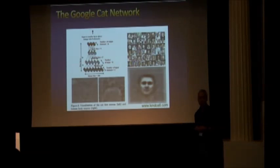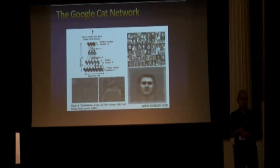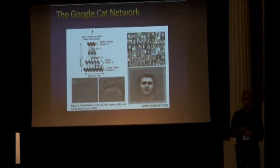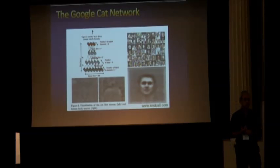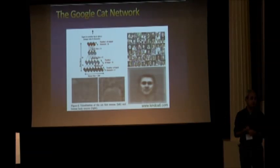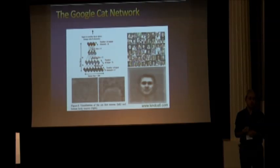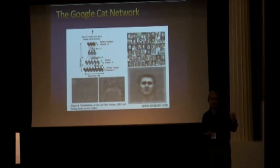Backprop is very successful these days. It's how YouTube finds videos for you, how a lot of image recognition happens, how Skype does live real-time translation from one language to another. Deep learning is all over the place. One famous example — on the front page of the New York Times — is the Google Cat Network, at the time the largest network ever trained with billions of parameters. It watched a lot of YouTube videos and learned to recognize things in them, including cats — because people really like to post videos of their cats.